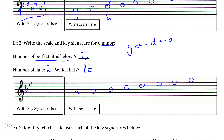And once again, if you want to check to see if the relative major matches up with what we found — G is La in this case, so if we count up to Do: La, Ti, Do — we see that Do is going to be B flat. And from the circle of fifths, we know that B flat major also has two flats, which shows us that the relative major and minor scales match up as well. So either way, this works.